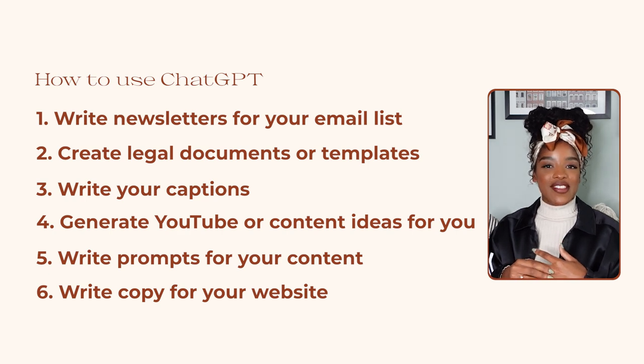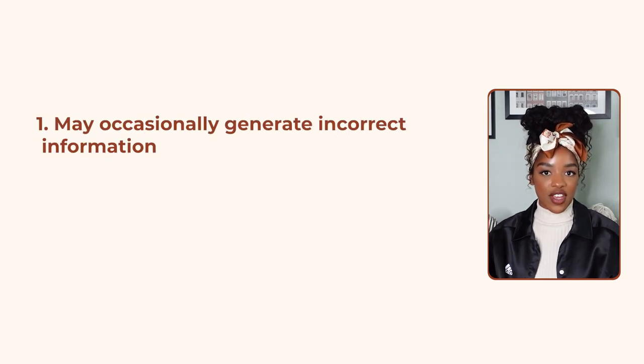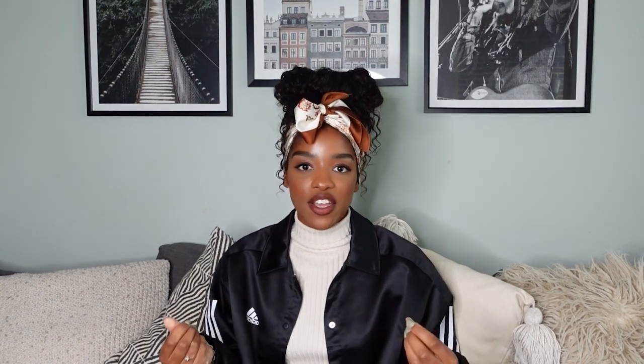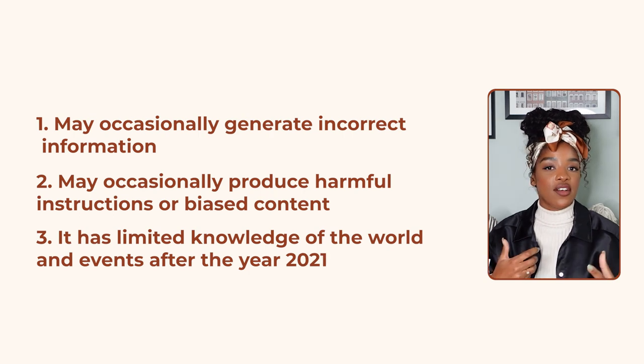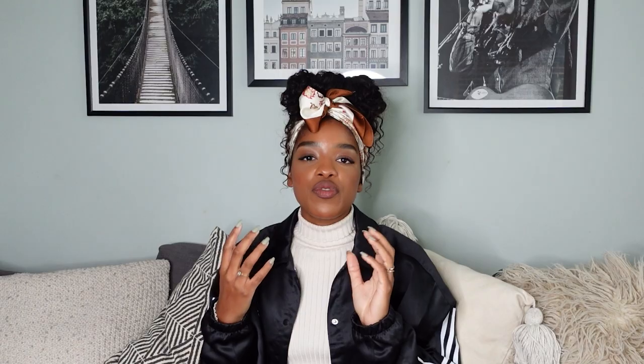Now let's talk about some of the pitfalls that come with the platform and some things to avoid. The limitations, which I'm reading from their website, include: it may occasionally generate incorrect information. A really good example of this is when I showed you how to use ChatGPT to write a newsletter — my input was to write a newsletter about Instagram's recent updates, but the output included some stale updates like Reels remixes, and it even referenced IGTV as an existing feature, which hasn't existed for a while. So keep in mind it's not always going to be completely accurate. It may also occasionally produce harmful instructions or biased content, and it has limited knowledge of world events after 2021.